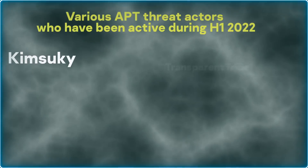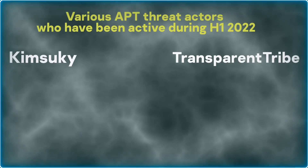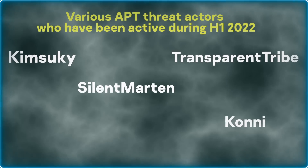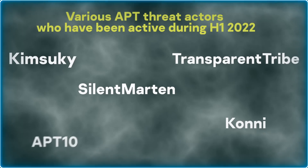APT campaigns motivated by geopolitics have not been confined to the conflict in Ukraine. So far this year, we've seen attacks on organizations around the world by various APT threat actors. These include Kim Sookie, Transparent Tribe, Silent Martin, Connie, and APT10.